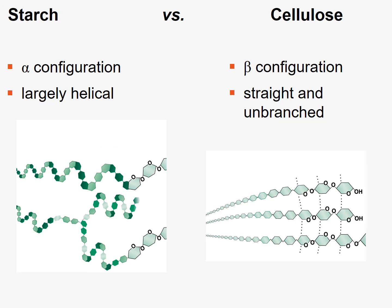Looking at the overall configuration: starch has an alpha configuration that creates alpha helices — these helical-type structures, even with branching. The beta configuration in cellulose creates long, linear, unbranched structures that can hydrogen bond with each other. Within the alpha helix, glucose molecules can hydrogen bond internally, but they generally do not hydrogen bond between separate polysaccharide chains.